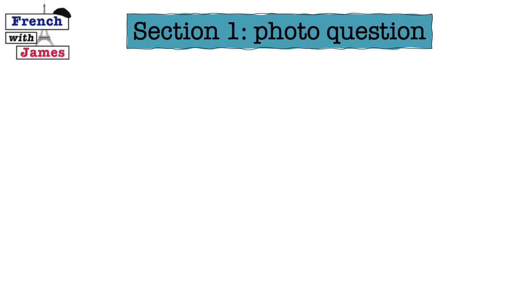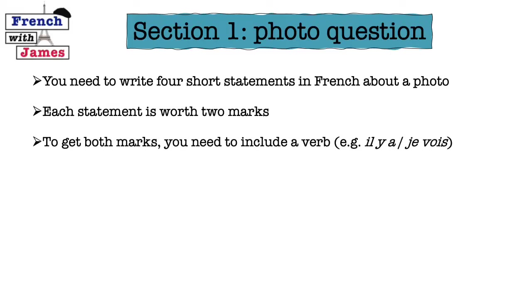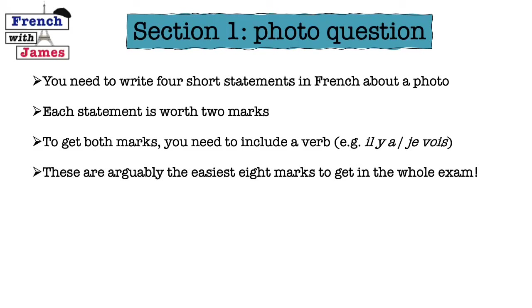Section 1 is the photo question. You'll have a picture — it generally has people in it — and you need to write four short statements in French about what you see. Each statement is worth two marks, and to get both marks you need to include a verb, not just a noun. So if you see three people and you just write 'trois personnes', you'll get one mark, but you need to say 'il y a trois personnes' or 'je vois trois personnes' to get both marks. They're arguably the easiest eight marks in the whole exam.